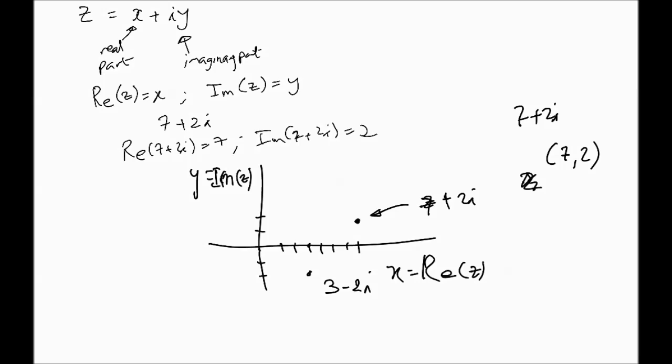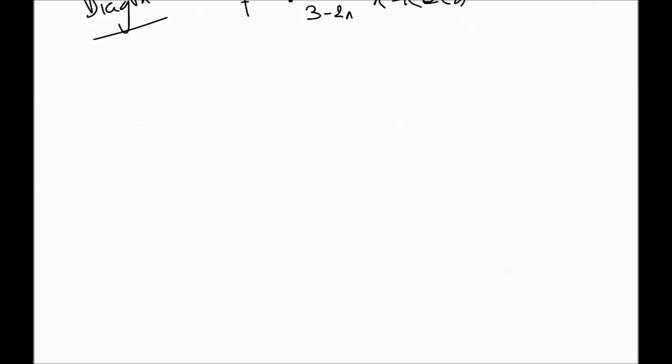Okay, so that's how, this is called an argand diagram. It's called an argand diagram. Now, let's move on. Let's look at the algebra next of complex numbers. Obviously, algebra, for algebra, we are, of course, talking about addition, multiplication, subtraction, division, and equality.